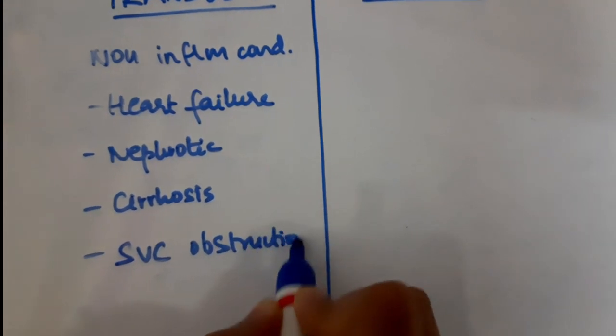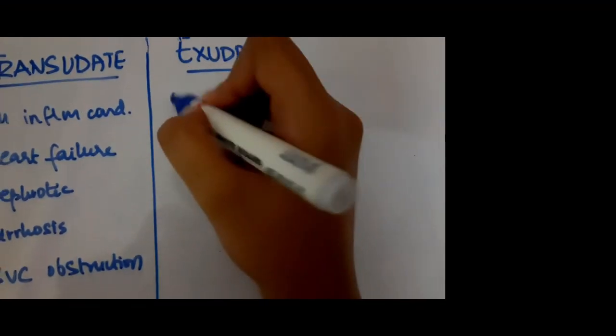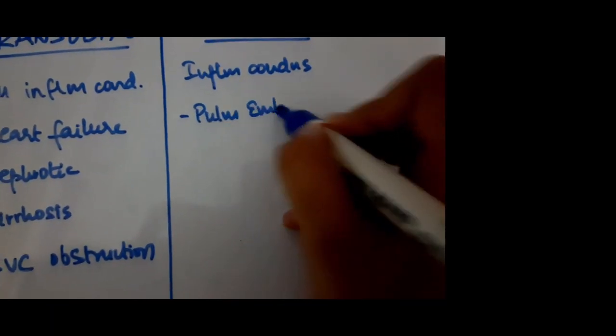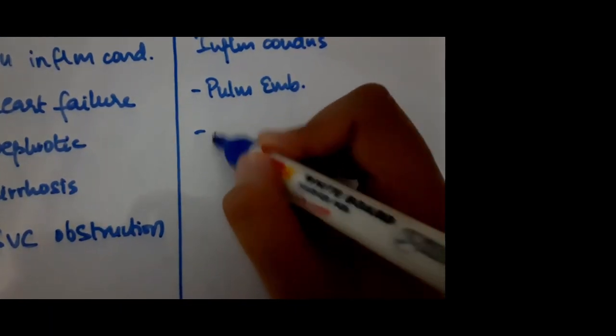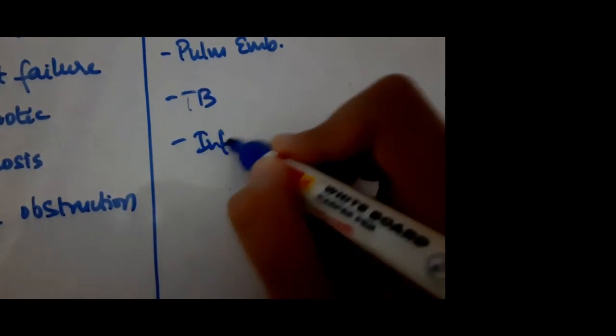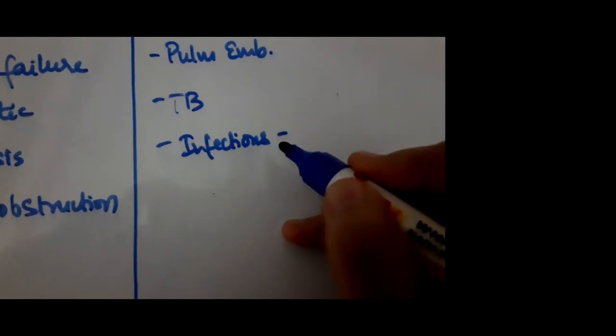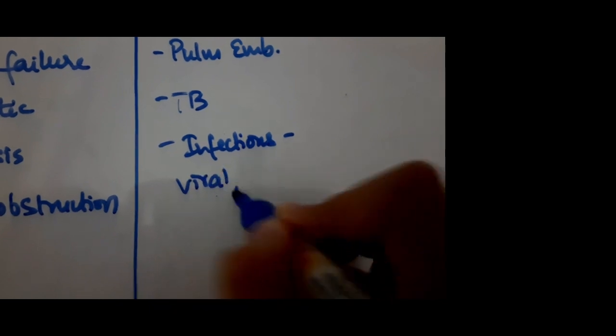Whereas exudates are seen in inflammatory infective conditions like pulmonary embolism, tuberculosis, infections of the lung which could be viral, bacterial or fungal, connective tissue disorders and Meigs syndrome.